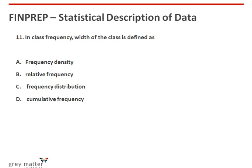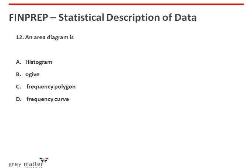Eleventh question: in class frequency, width of the class is defined as frequency density. The answer is option A, which is frequency density. Twelfth question: an area diagram from the given options refers to a histogram. So the answer is option A, which is histogram.